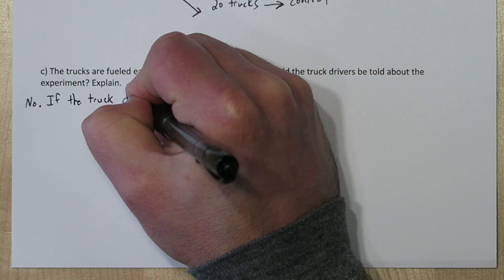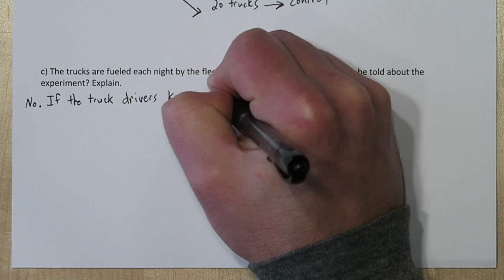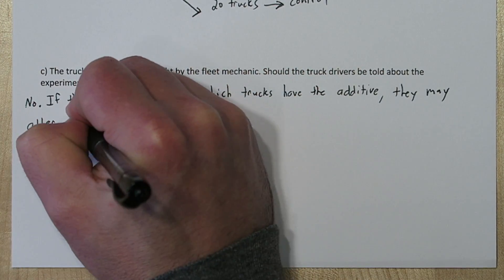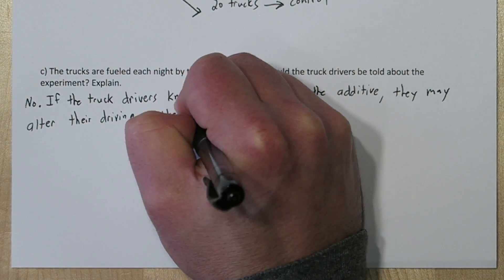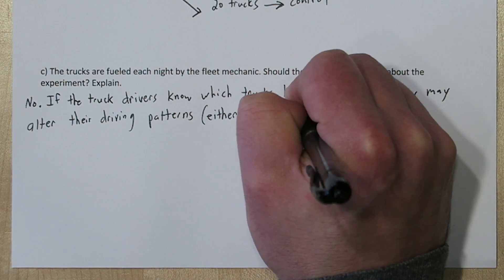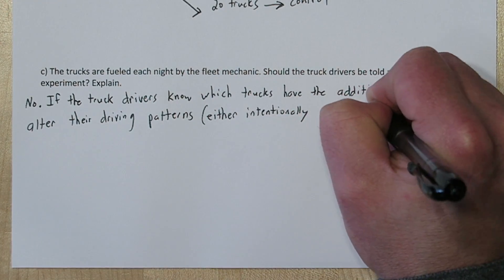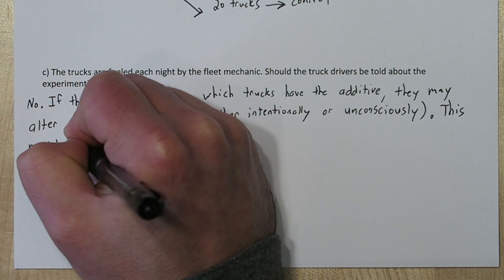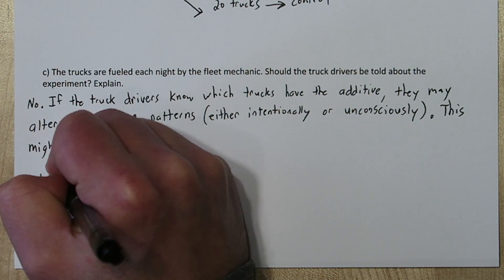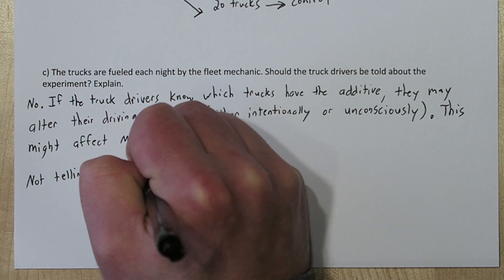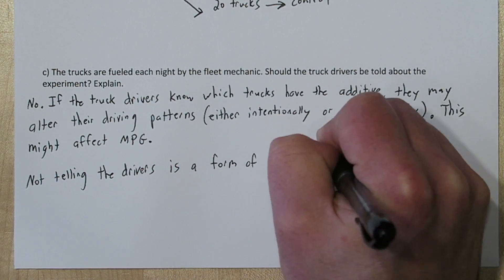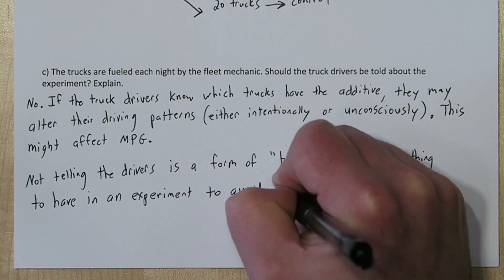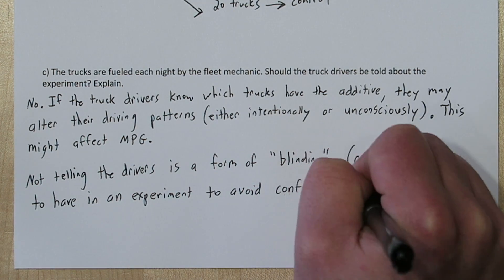The drivers should not be told about the experiment. If the truck drivers know which trucks have the additive, they may alter their driving patterns, either intentionally or unconsciously. This might affect the MPG and confound with the fuel additive. It'd be difficult for us to tell what caused the increase in MPG — the fuel additive or the driver's behavior. Not telling the drivers is a form of blinding, and that's a good thing to have in an experiment.